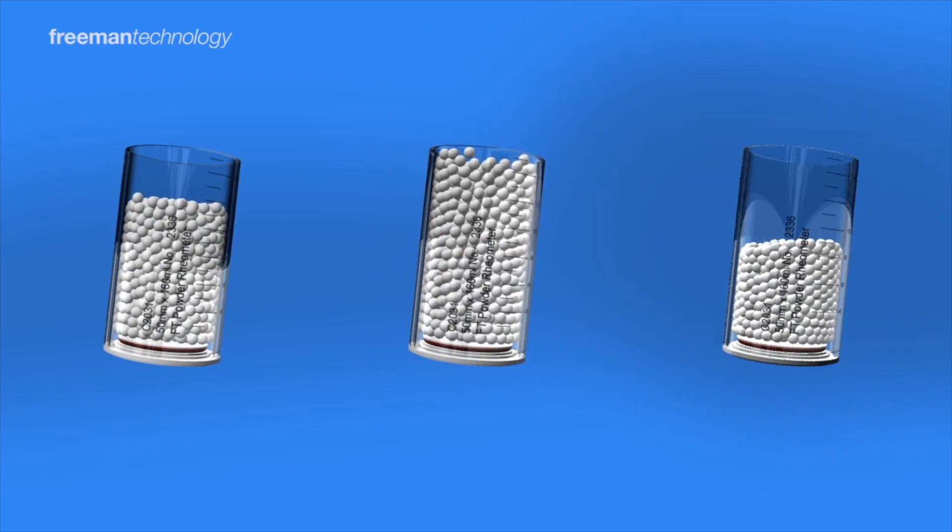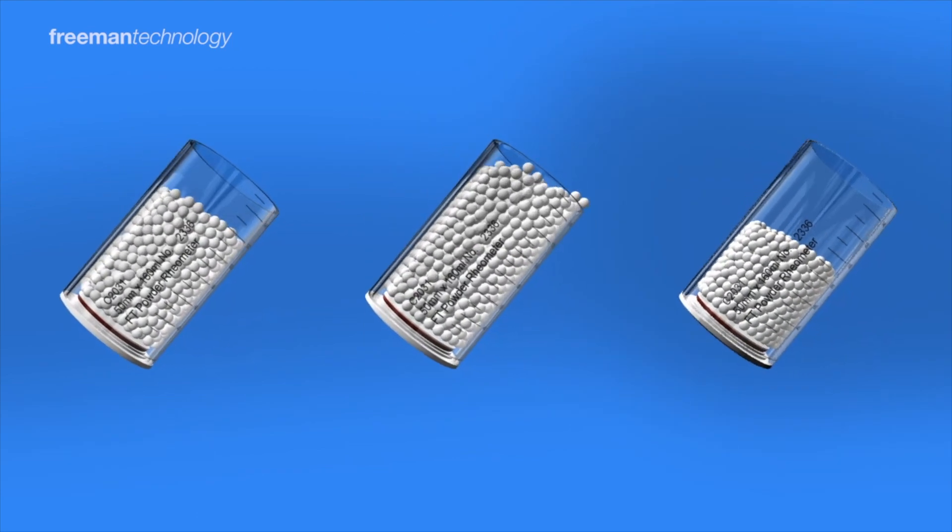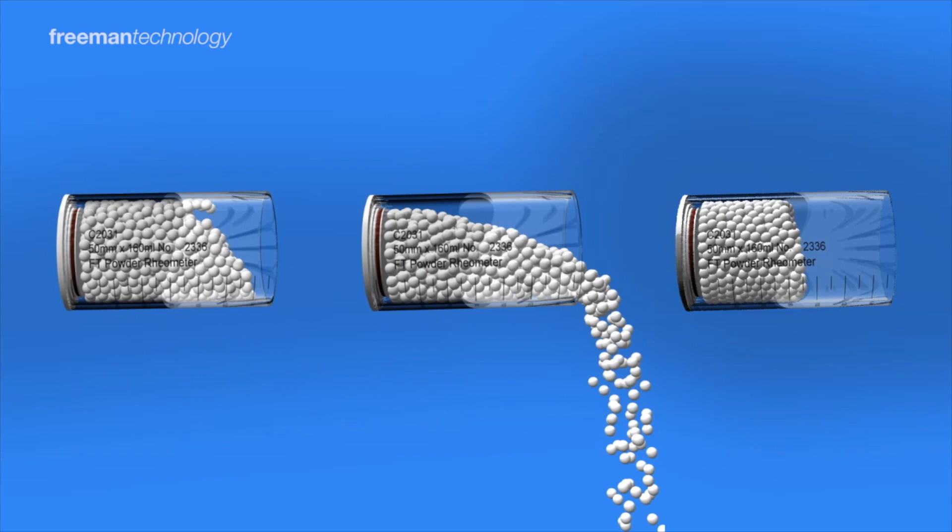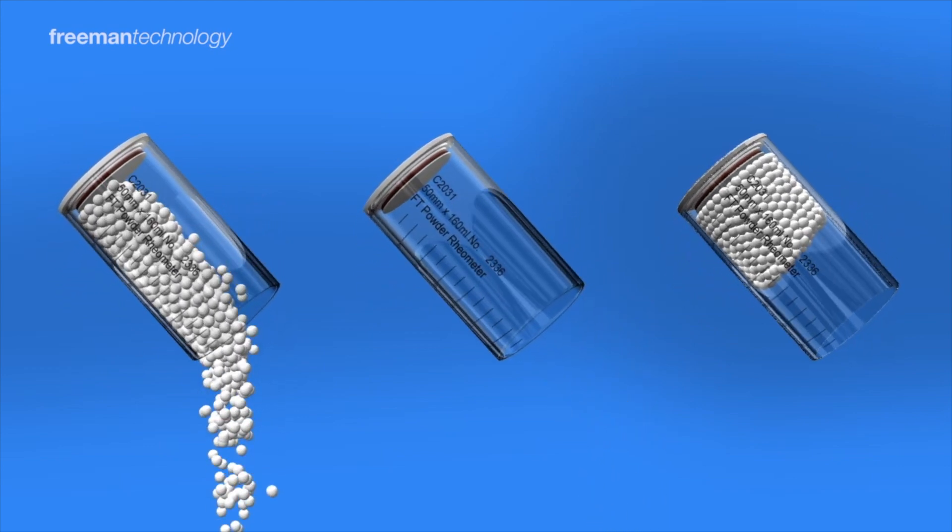They can be aerated during discharge, during a blending process, or conveying. Again, the introduction of air changes the particle-particle interactions and the overall bulk powder behavior. So recognizing first that the same powder can behave in quite different ways depending on the environment to which it's being exposed or handled is the first step in deciding how best to characterize them.